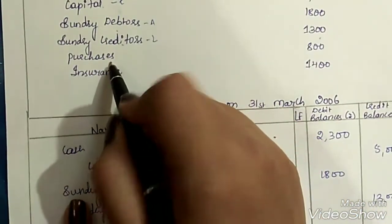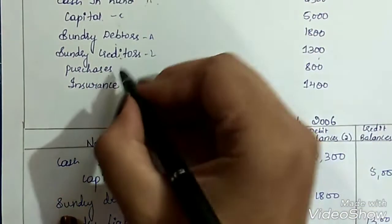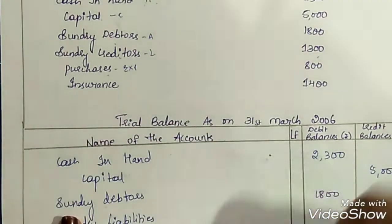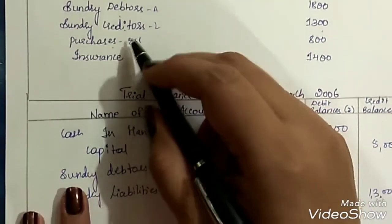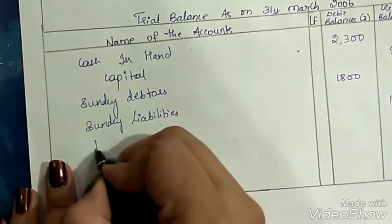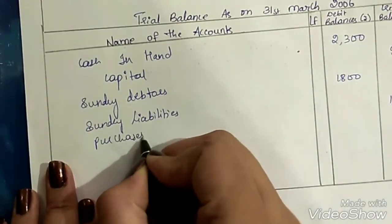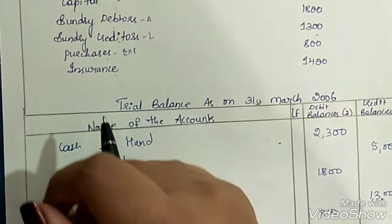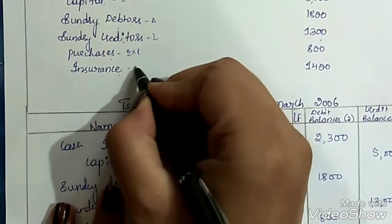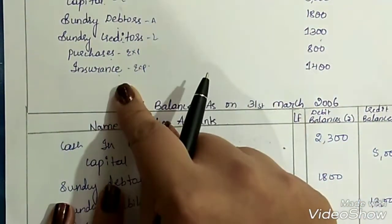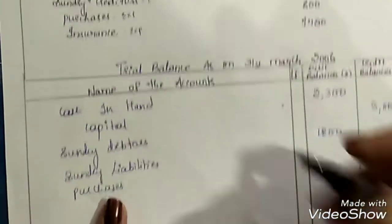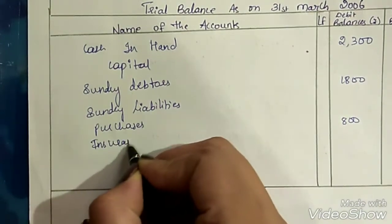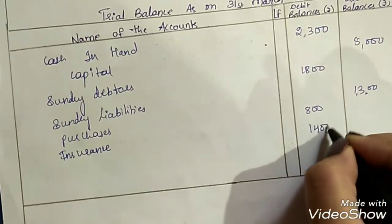Next, purchases. When we purchase certain goods, we have to pay an amount, so they are treated as our expenses. Expenses also need to be recorded on the debit side as they have debit balance. Purchases — rupees 800. Next, insurance. When we take an insurance policy, we have to pay a premium, so this is also treated as an expense. Expenses need to be recorded on the debit side — insurance, rupees 1400.